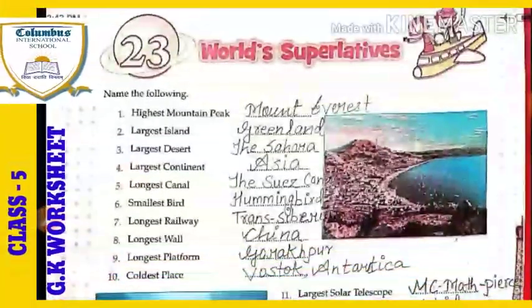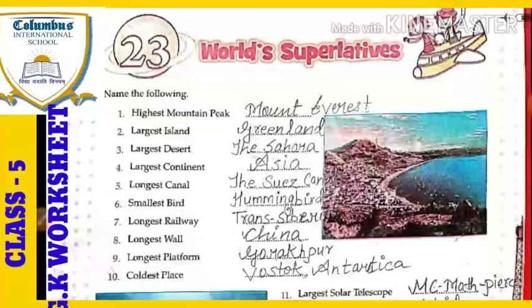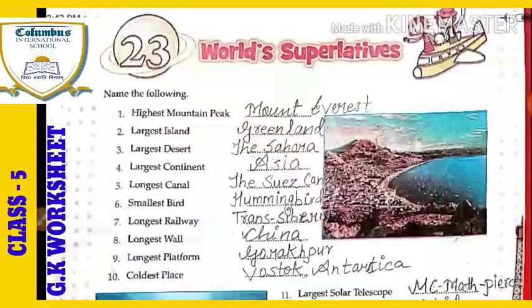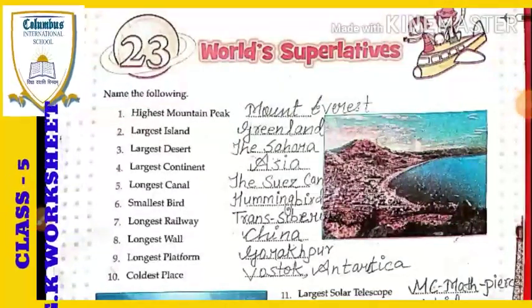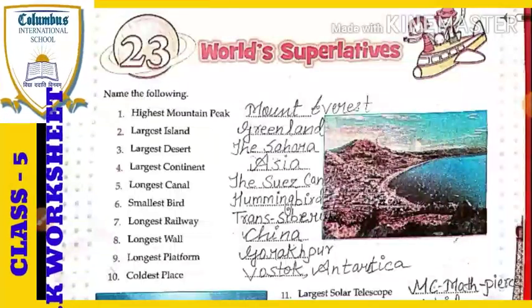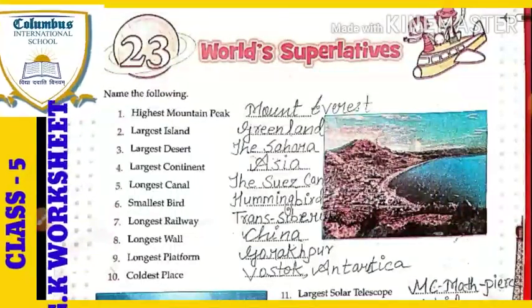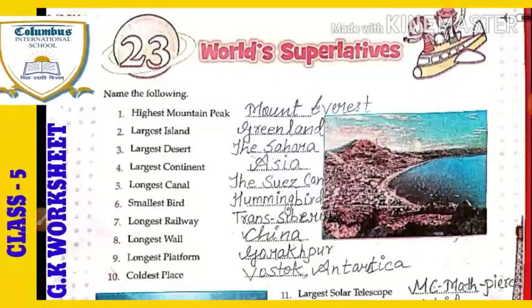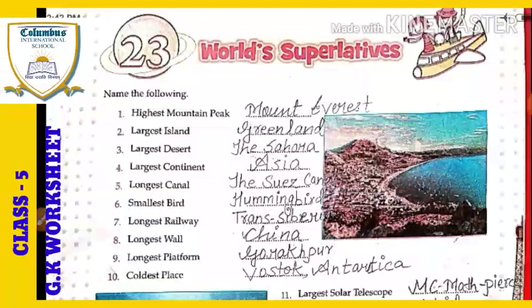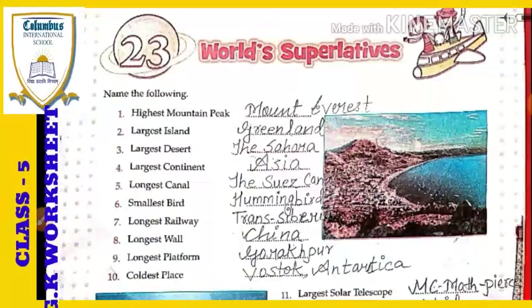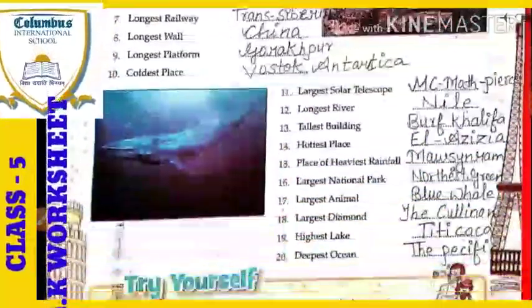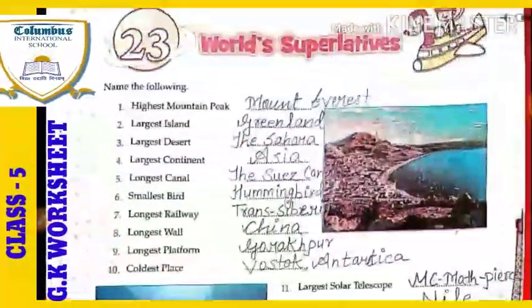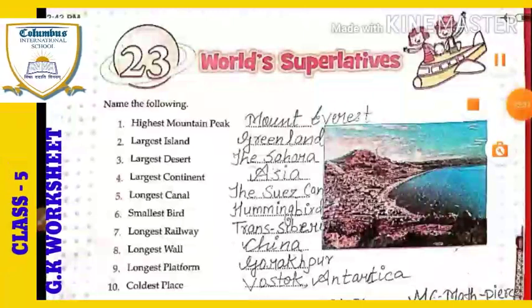These were all the world superlative things. Hope you all understood this chapter well. Let's complete the chapter with the correct spellings of these things, and learn all the world superlative things given in this chapter. Complete your work and then send it through the school application. Try to revise and learn it also. Thank you, and have a good day.